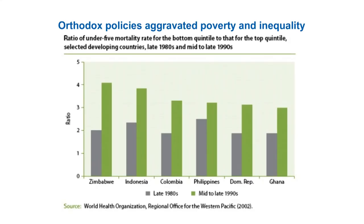These orthodox policies actually aggravated poverty and inequality massively. The remarkable work done by Andrea Cornia and his colleagues showed how infant mortality rates actually grew significantly for poor segments of society in an extensive number of countries in the 1980s and 90s as a result of these policies.